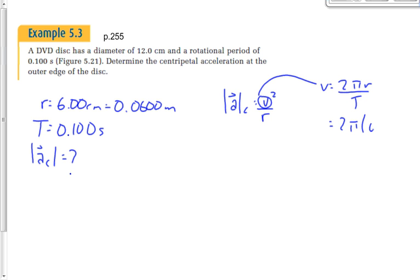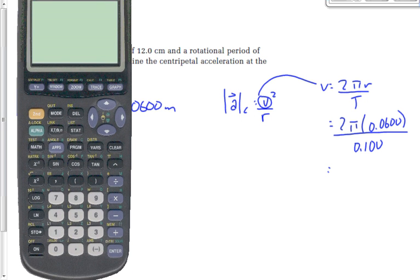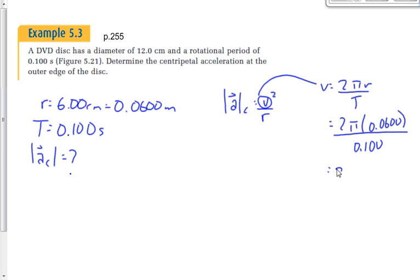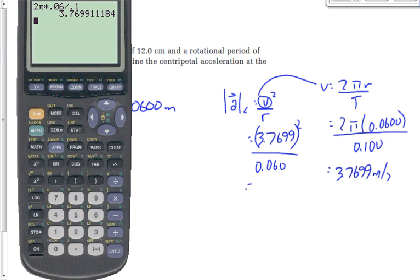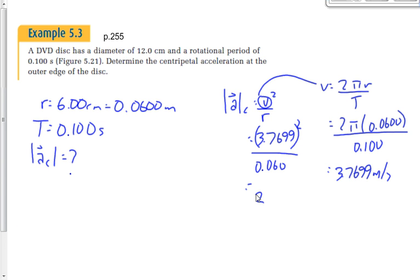So, we've got 2 times pi times 0.0600, divided by the period of 0.100. Let's figure out what that means, or what that value is. A few seconds, guys. Don't pack up yet. 2 times pi times 0.06, divide that by 0.1, gives me 3.7699 meters per second, which we're going to turn around and plug into here. Don't forget to square that, because it is V squared, not V, over 0.060. So, let's square that. Let's divide it by 0.06, and we get an acceleration of 236.9, or we're going to round that to three digits, 237 meters per second squared.